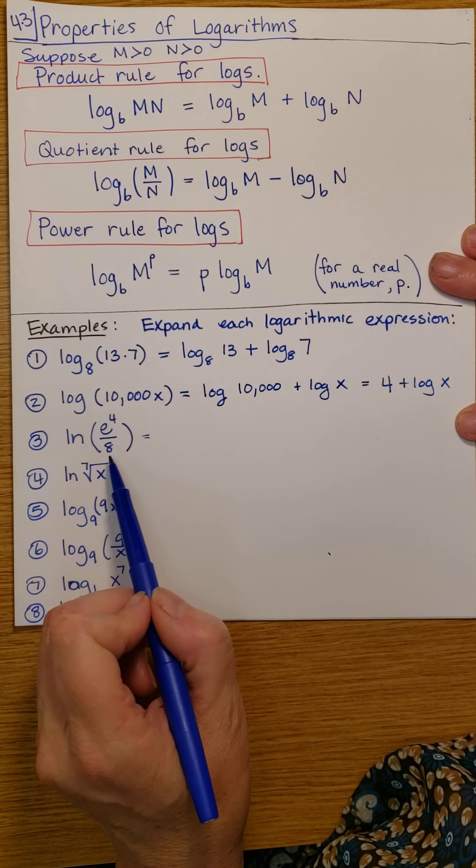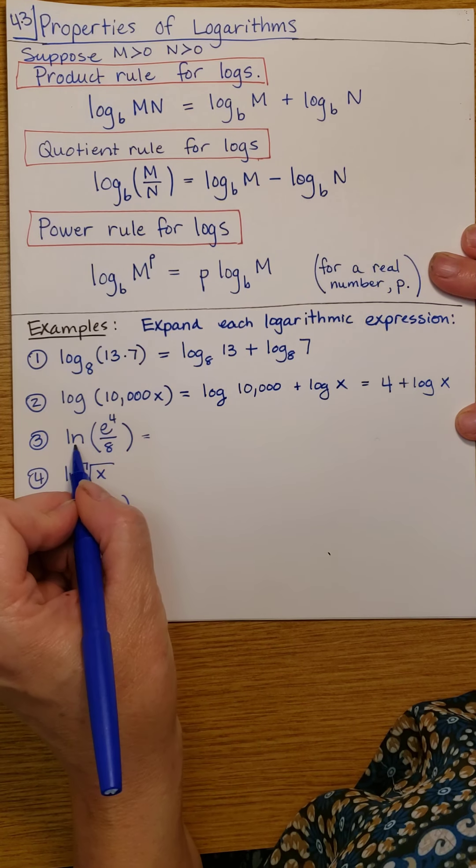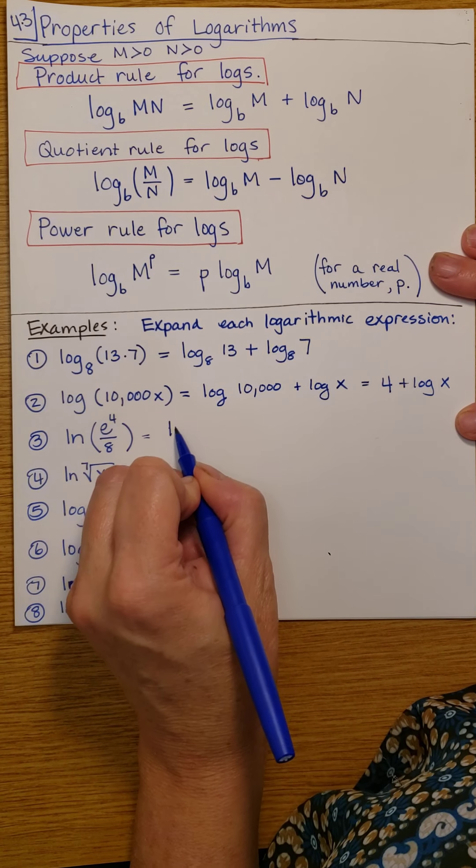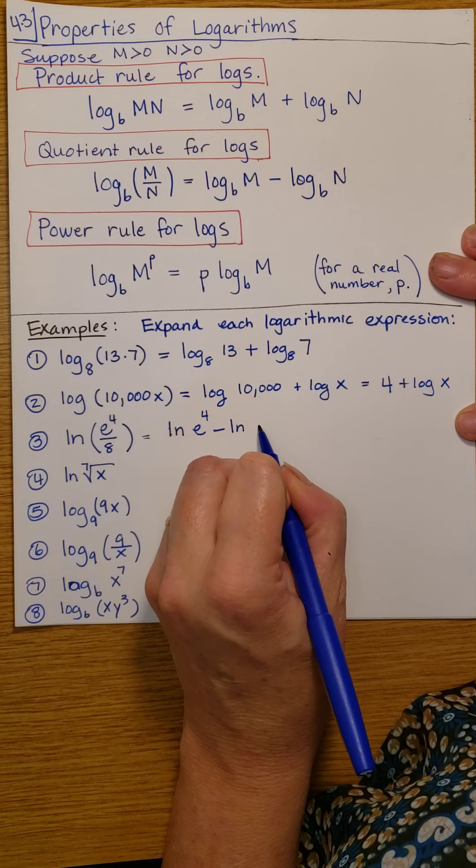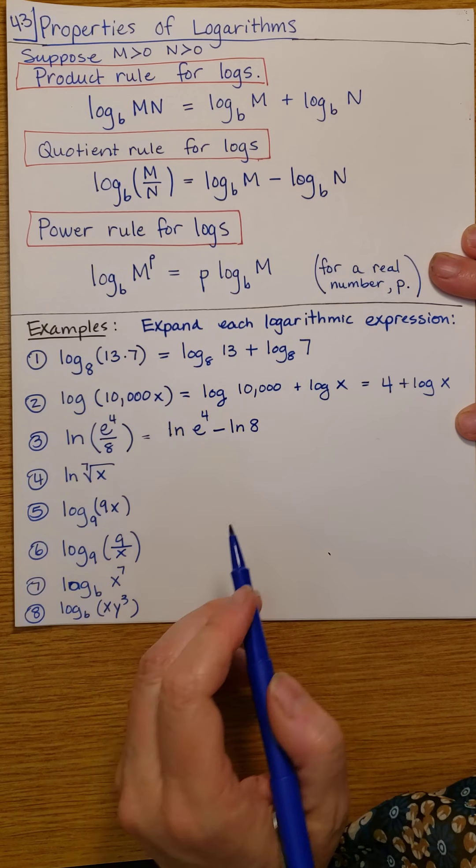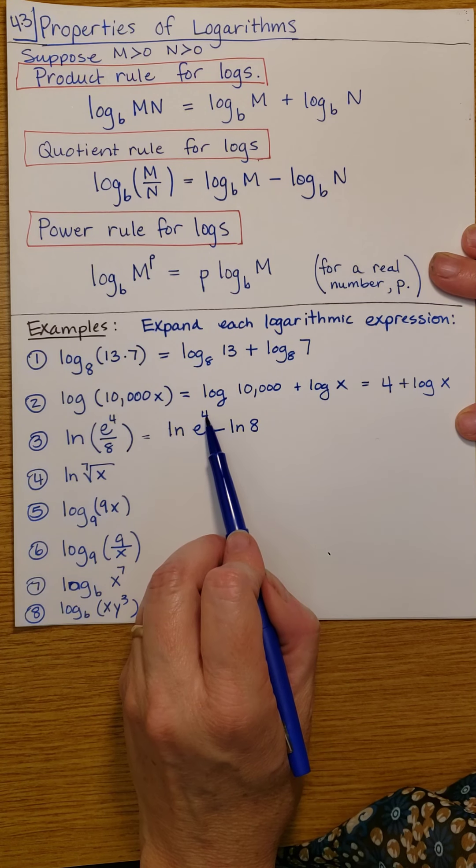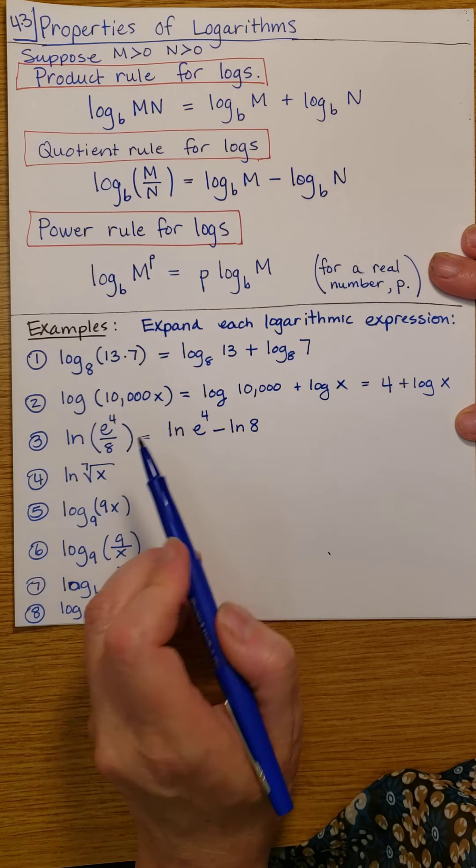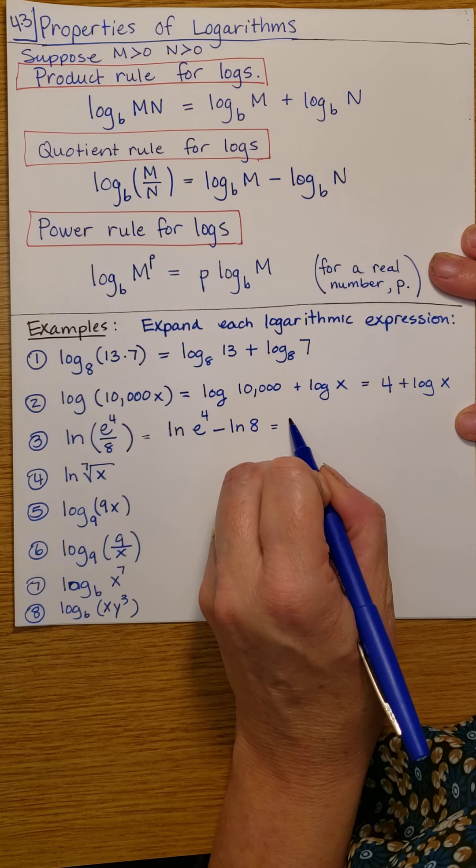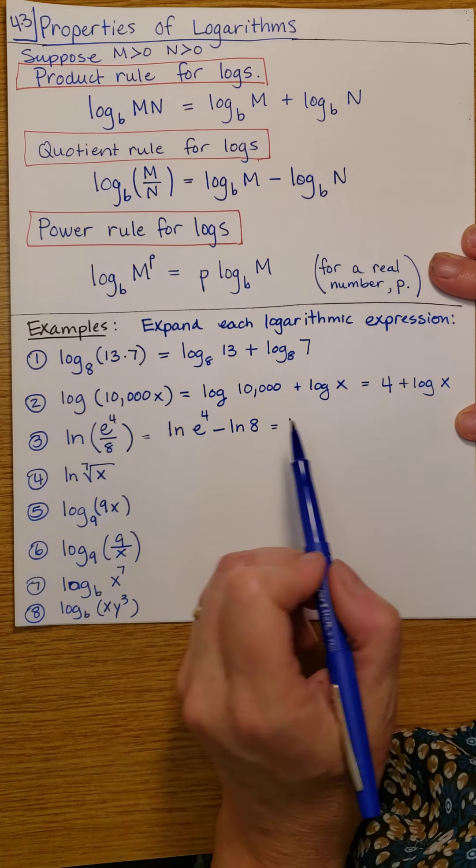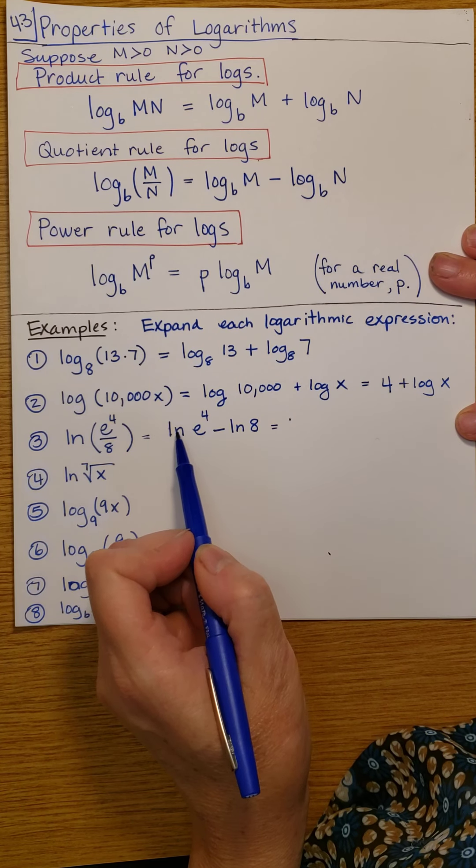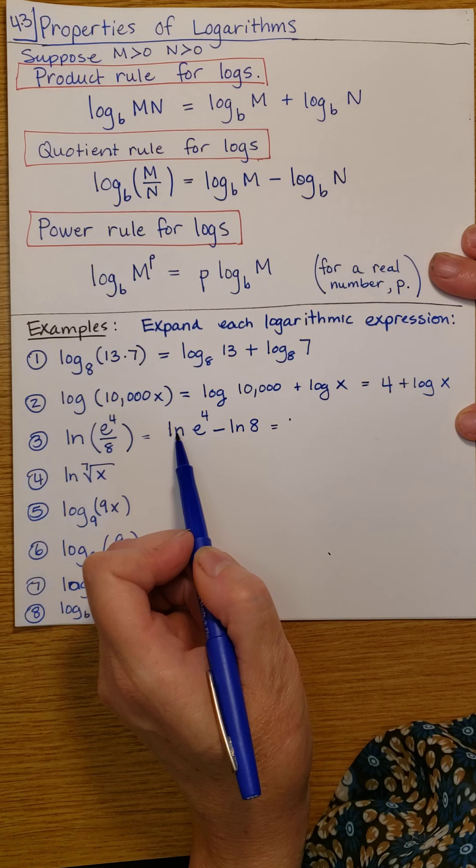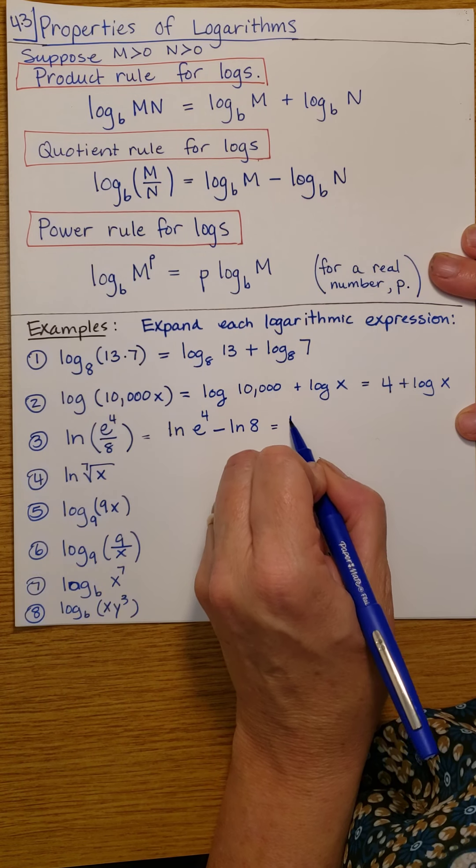Now, here we have a quotient, and we have the natural log. So this becomes the natural log of e to the 4 minus the natural log of 8. And then this is a power. So by the power rule, I can bring that power out front. And also, you can just notice that the natural log and e are inverses of each other. So when I take the composition, I'm just going to get 4.